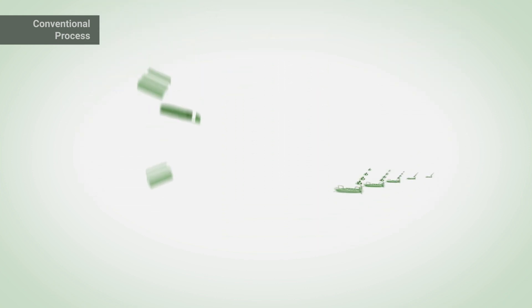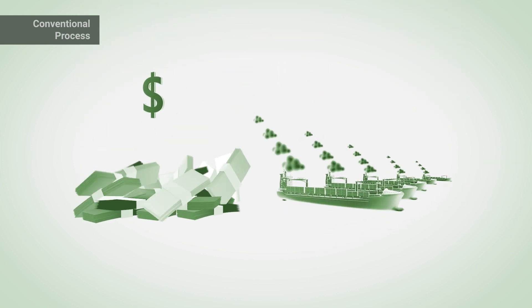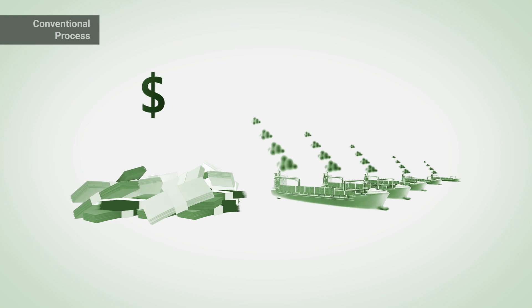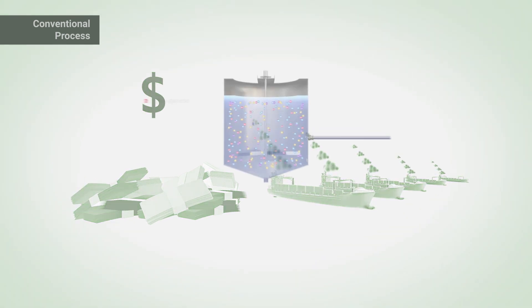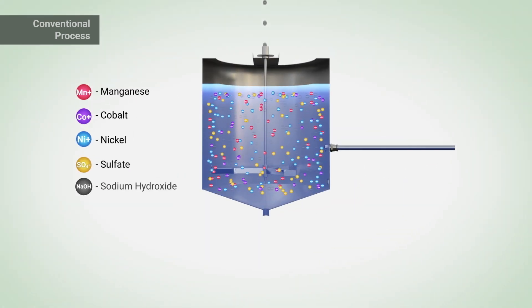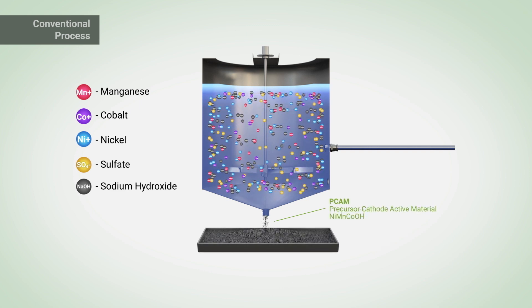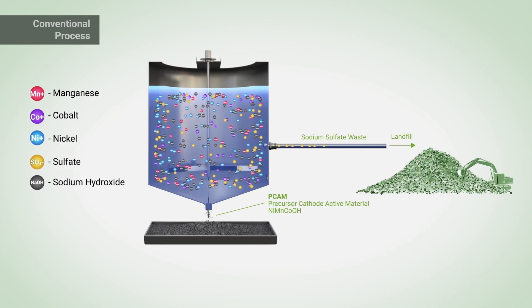This adds thousands of dollars per ton, energy, logistics, and a serious environmental footprint. The metal sulfates are then chemically combined to form a precursor known as PCAM with all the sulfate going to waste.